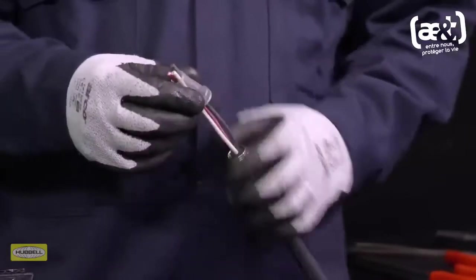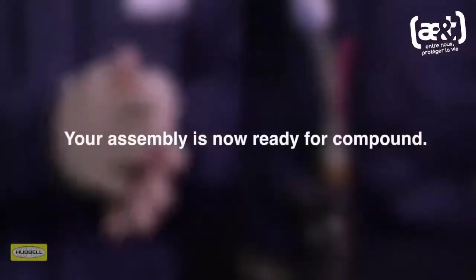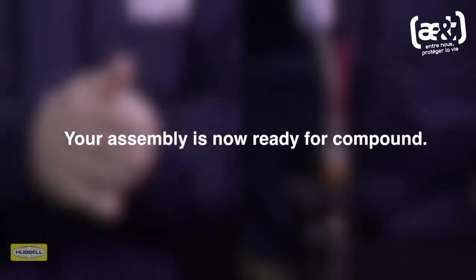Fit the pot and check that the inner sheath is the height of the pot shoulder. Your assembly is now ready for compound. Follow our Hawke Seal compound or Express Resin installation videos for step-by-step instructions.